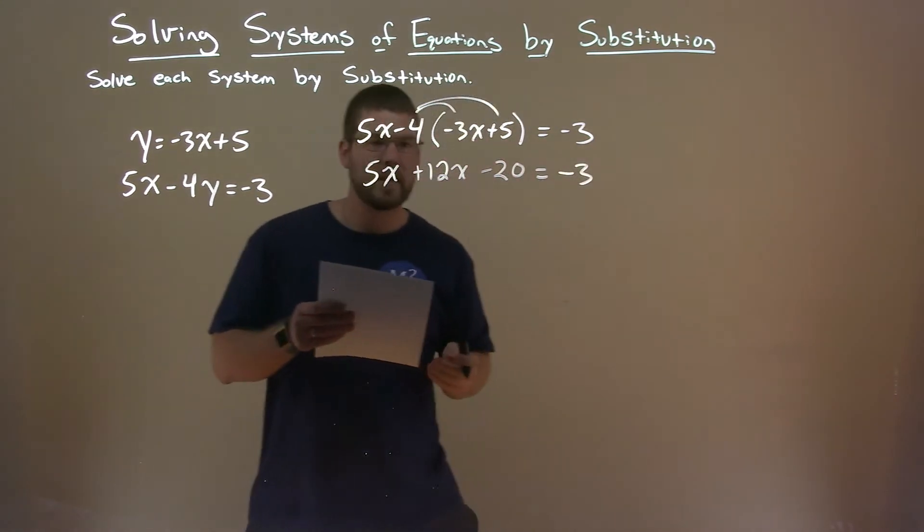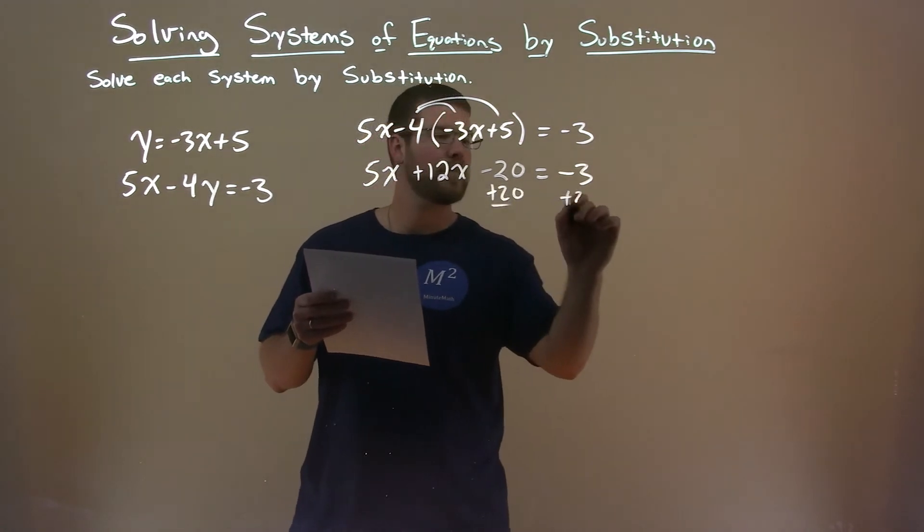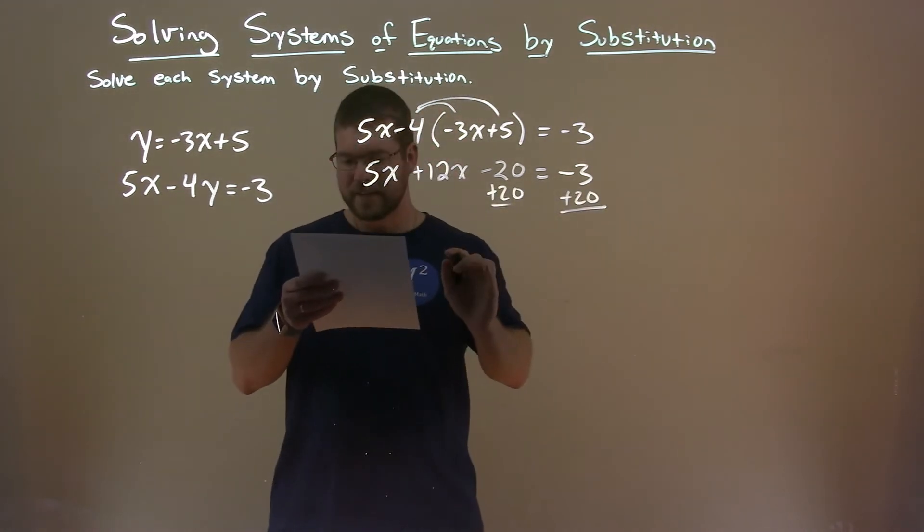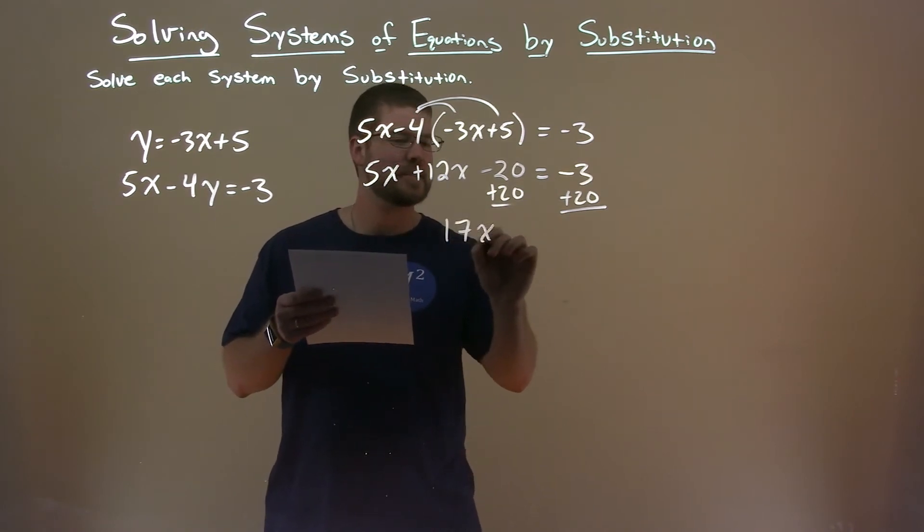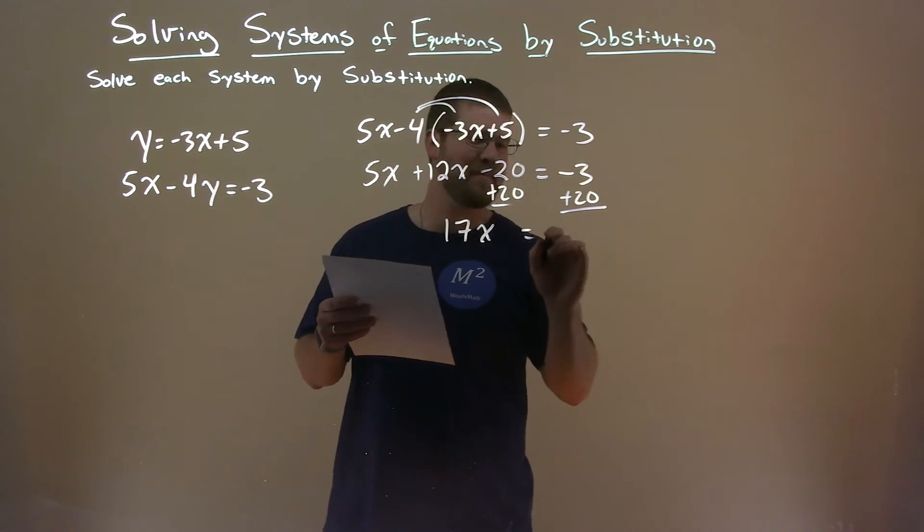Now we want to simplify as much as we can. We add 20 to both sides. And 5x plus 12x is a 17x. Simplify this: minus 3 plus 20, continue that step, it's 17.